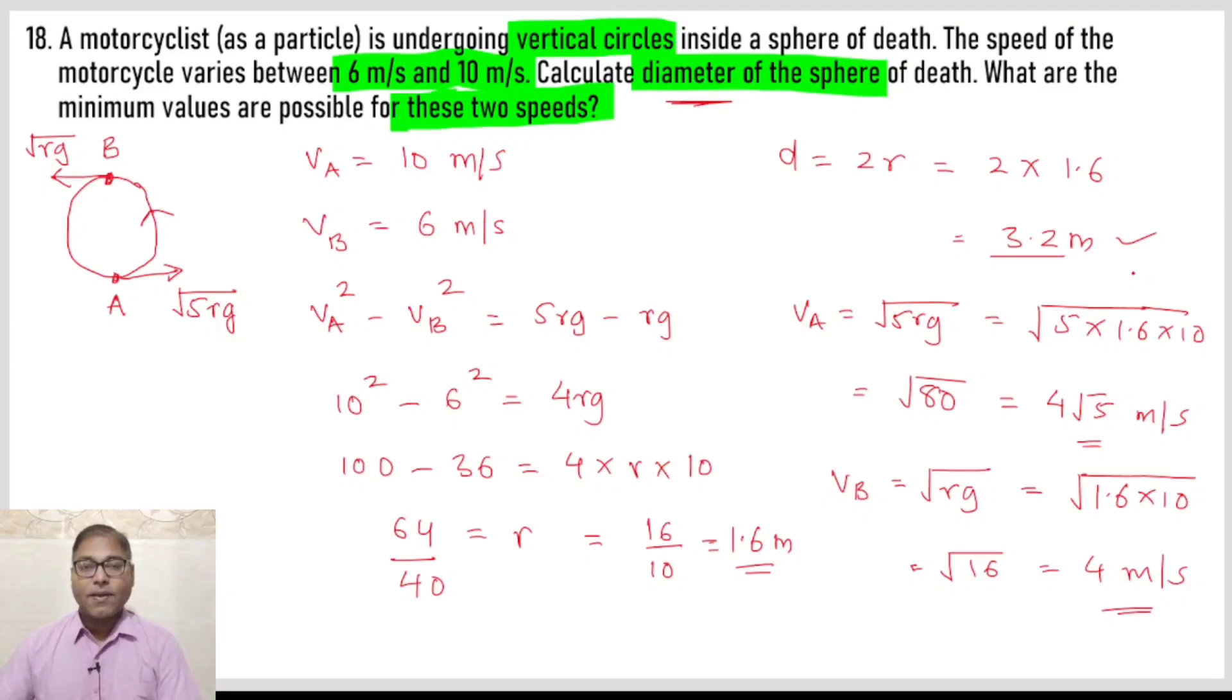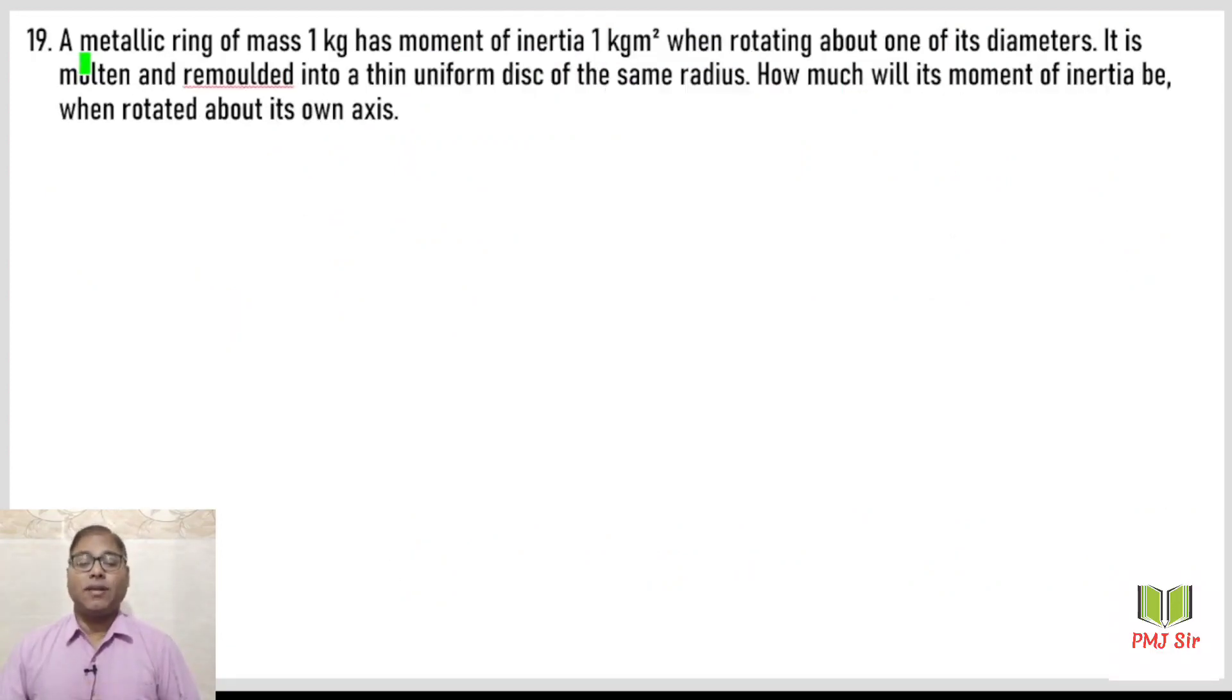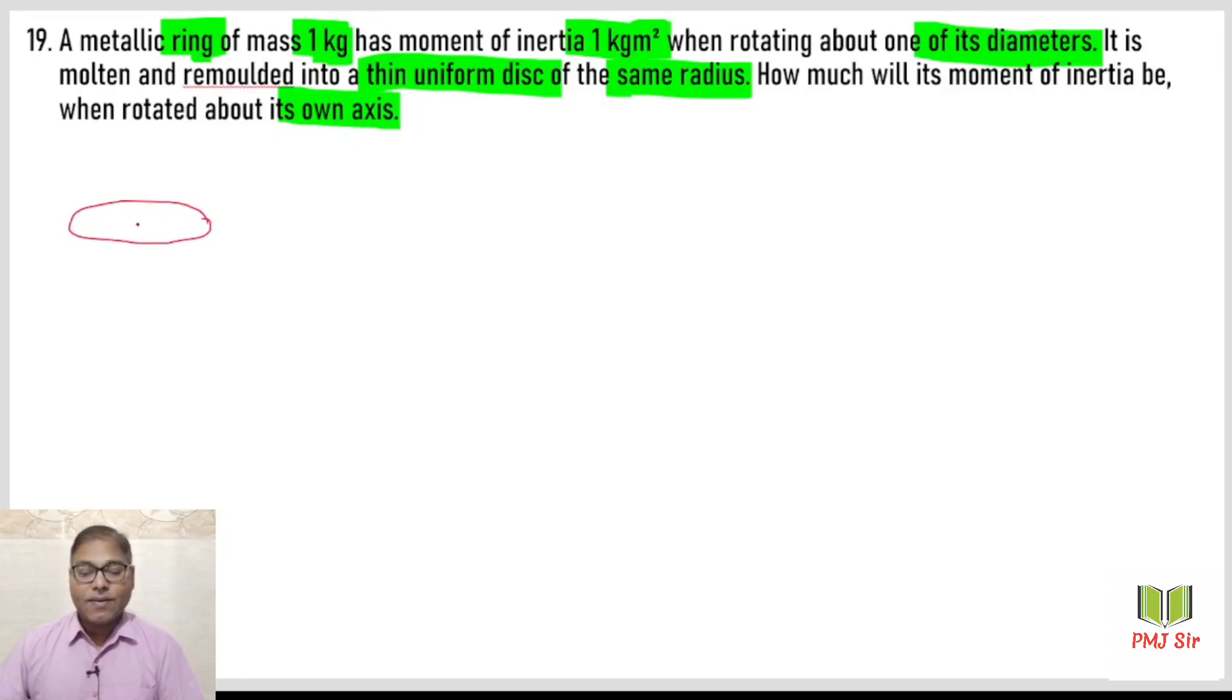Let us see question number 19. A metallic ring of mass 1 kg has a moment of inertia of 1 when rotating about an axis of its diameter. It is molten and remolded into a thin uniform disk of the same radius. How much will its moment of inertia be when rotated about its own axis, perpendicular to the plane?